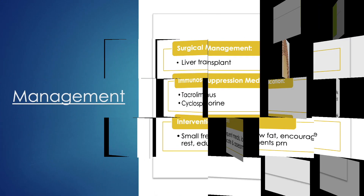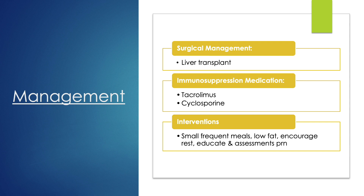Management for hepatitis: the surgical approach is a liver transplant. When performing any transplant, beyond doing a cross match, we give immunosuppressive medications to prevent organ rejection — examples include tacrolimus and cyclosporine. For nursing interventions, providing small frequent meals is important because hepatitis patients have anorexia and decreased appetite, which causes nutritional deficiencies, malnutrition, and further weight loss.